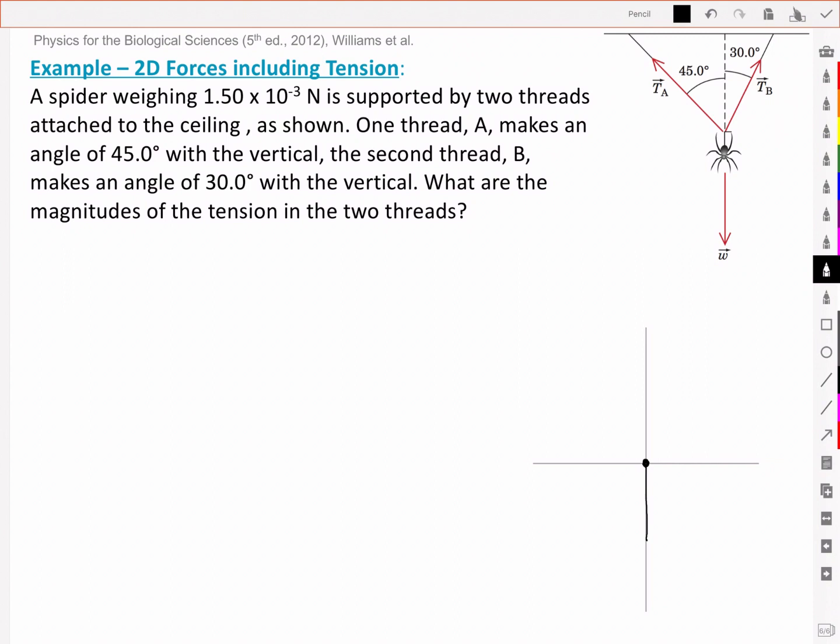There's our spider. We've got its weight or the force of gravity acting downwards and we know that that is going to be 1.50 times 10 to the negative 3 newtons.